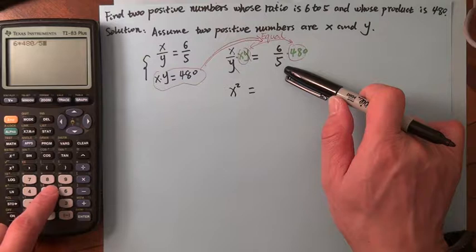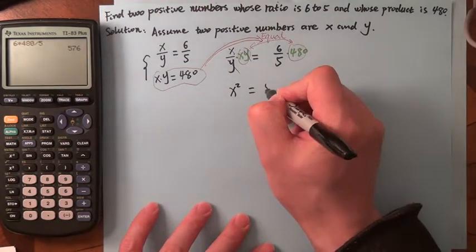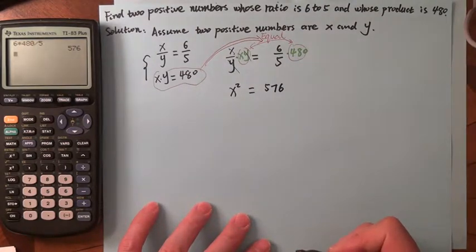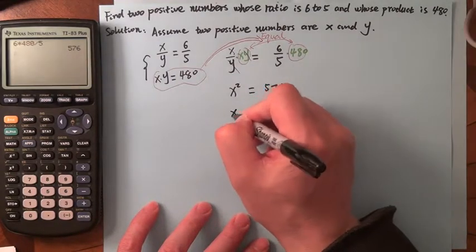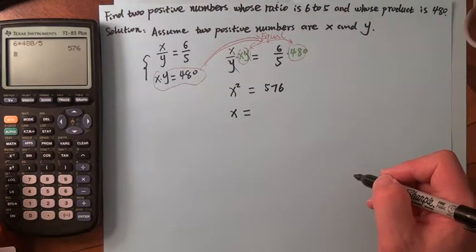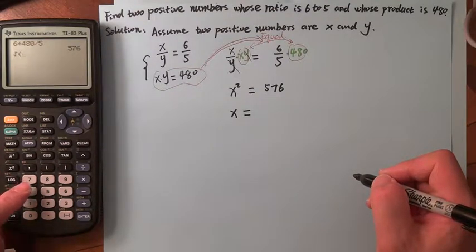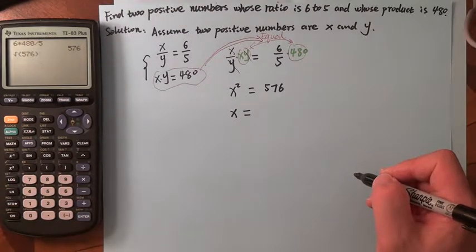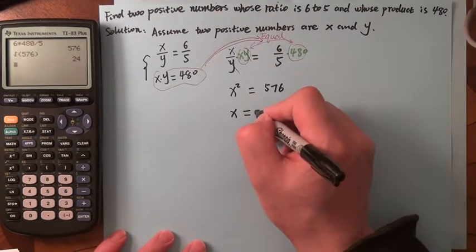So X squared equals 576. X equals the square root, so hit second, square root, 576, and then enter. X is 24.